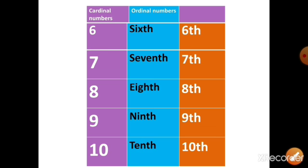1, 2, 3, 4, 5, 6, 7, 8, 9, 10 are cardinal numbers. Ordinal numbers are 1st, 2nd, 3rd, 4th, 5th, 6th, 7th, 8th, 9th, 10th, these are ordinal numbers.